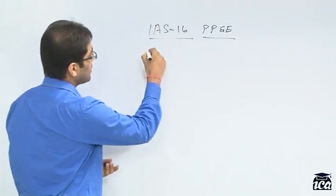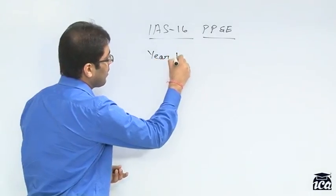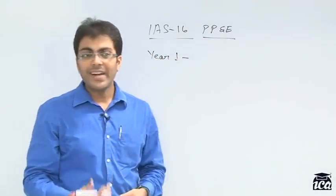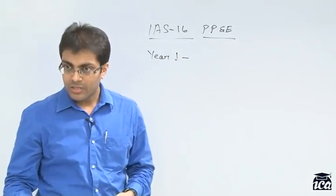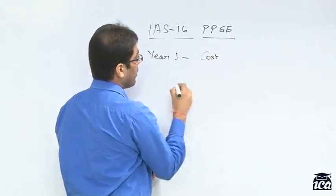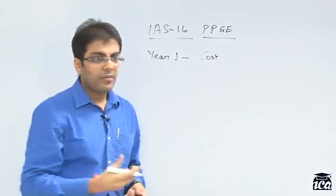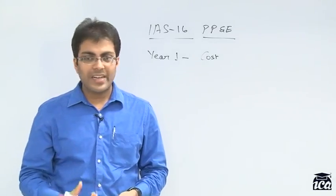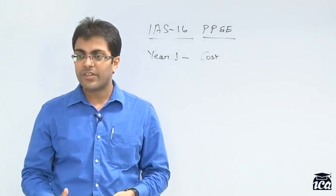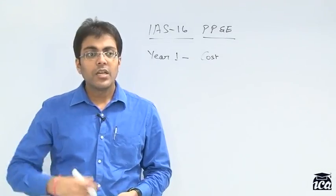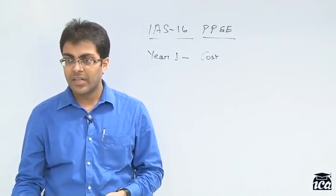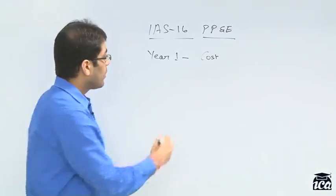What do we understand by subsequent measurement of property, plant and equipment? When we bought something in year 1, we said that we will measure it at cost. But in the definition of property, plant and equipment, we have talked about how it is used for more than one year, more than one period.